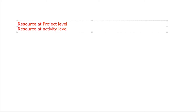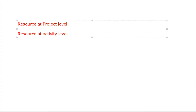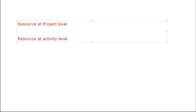Resources exist at two levels: resources at the project level and resources at the activity level. At the project level you see what is available enterprise-wide, and at the activity level you assign specific resources to individual activities.